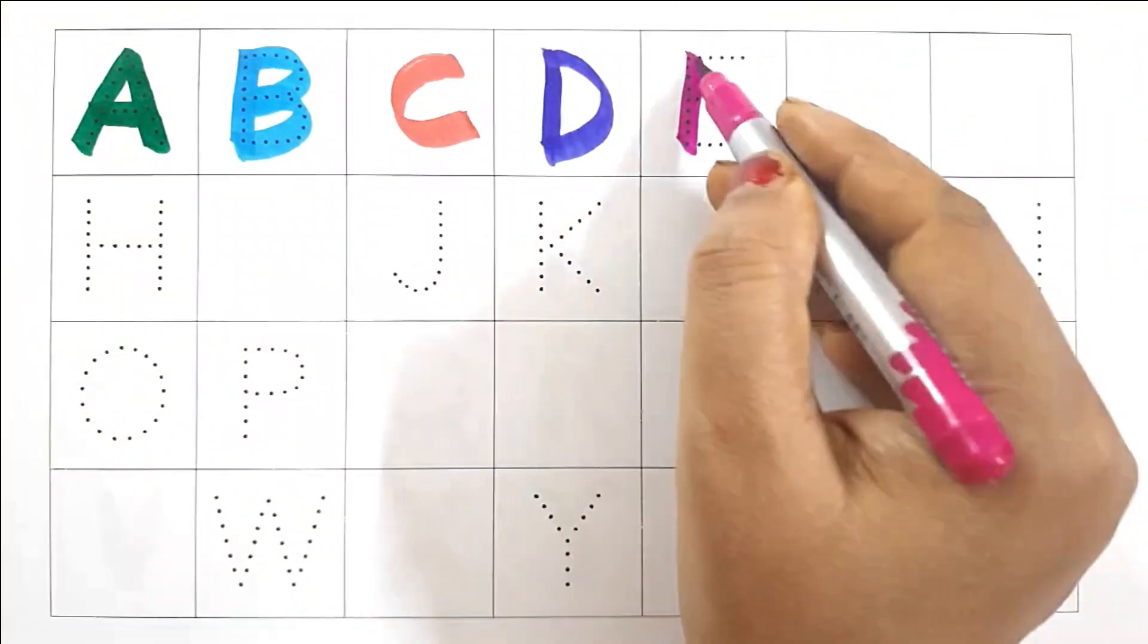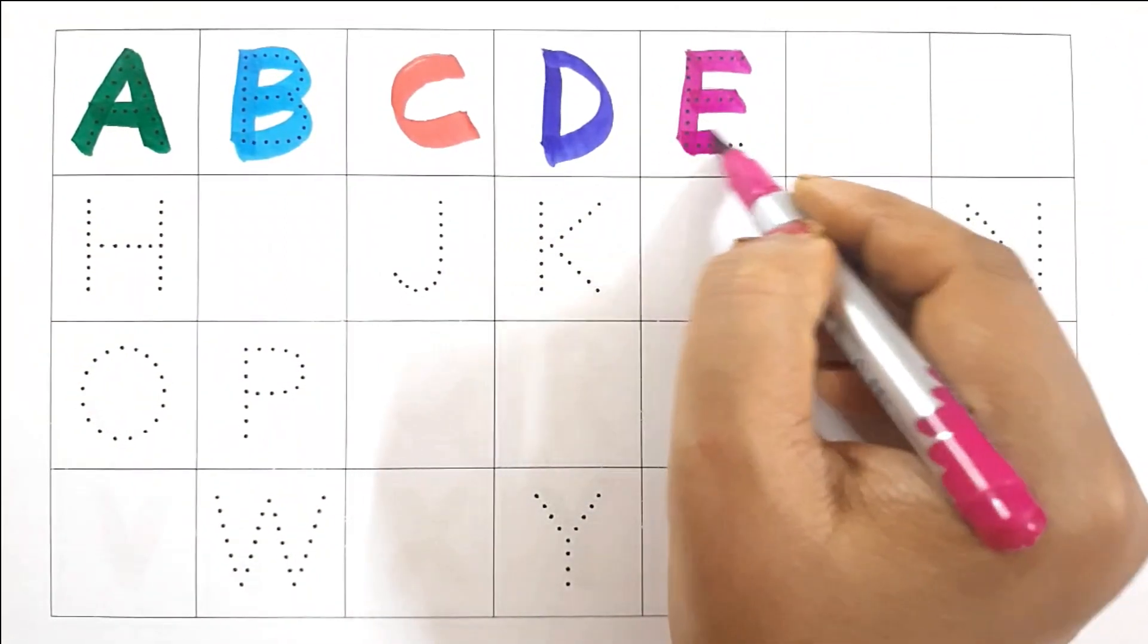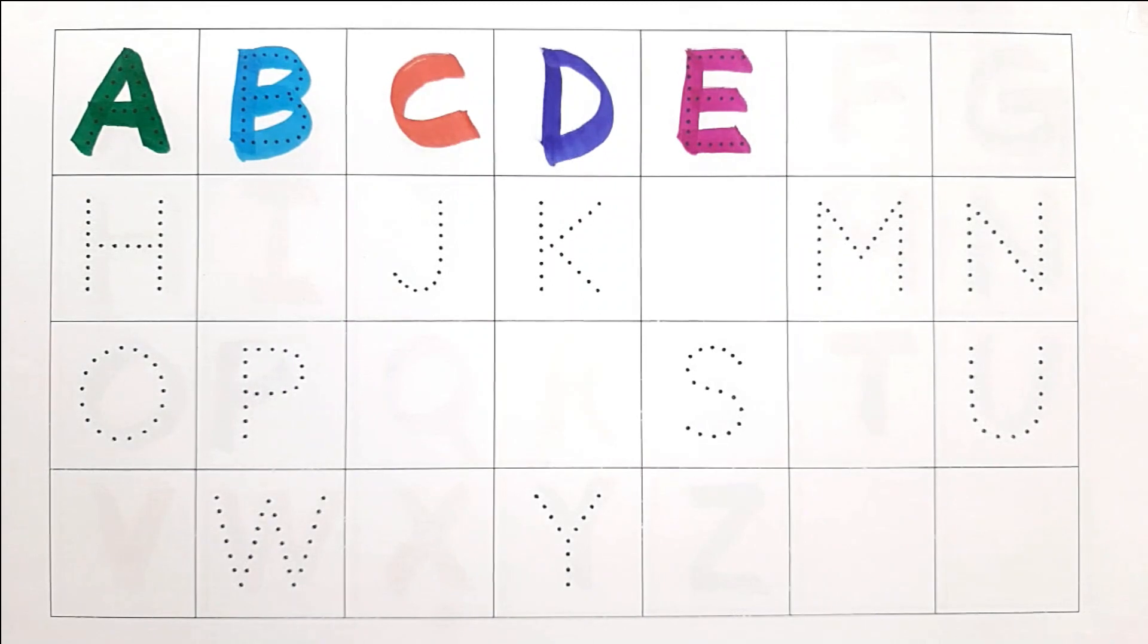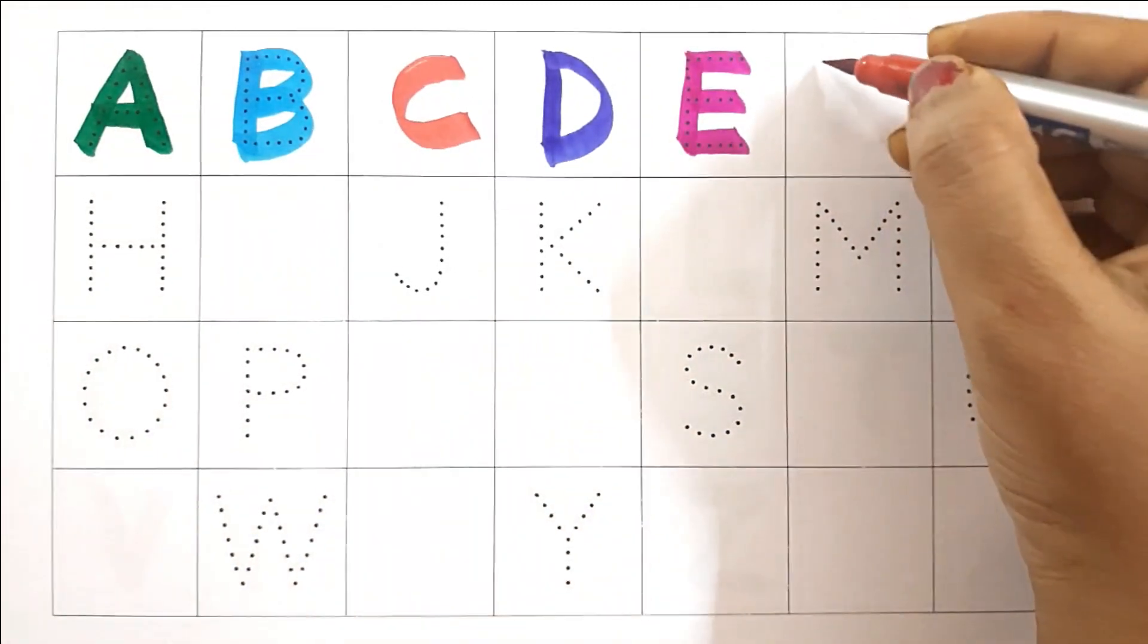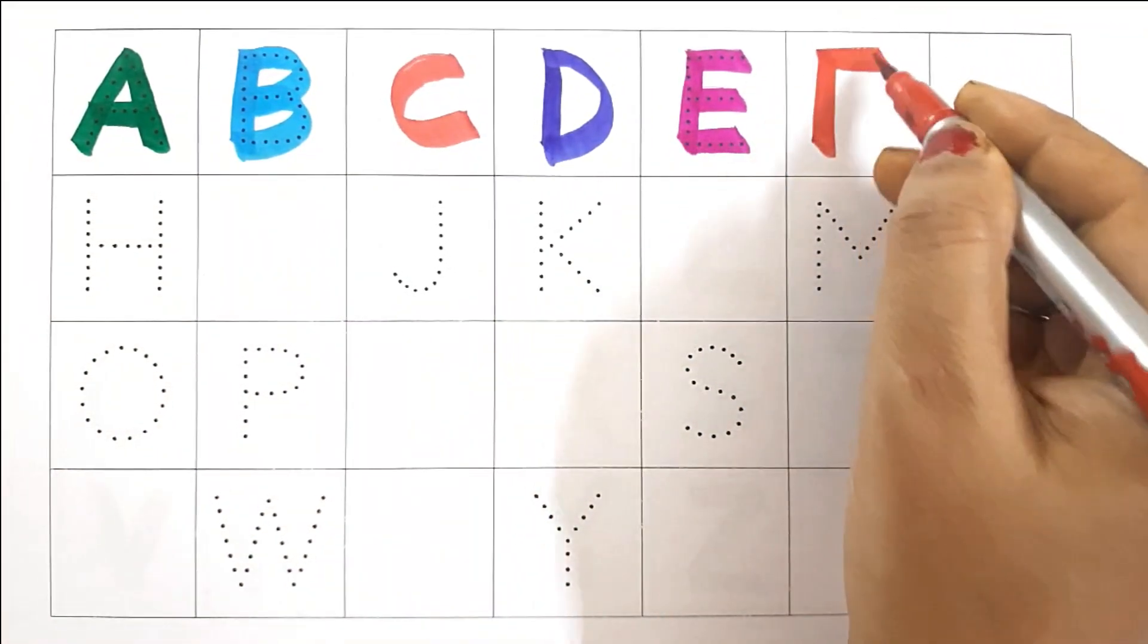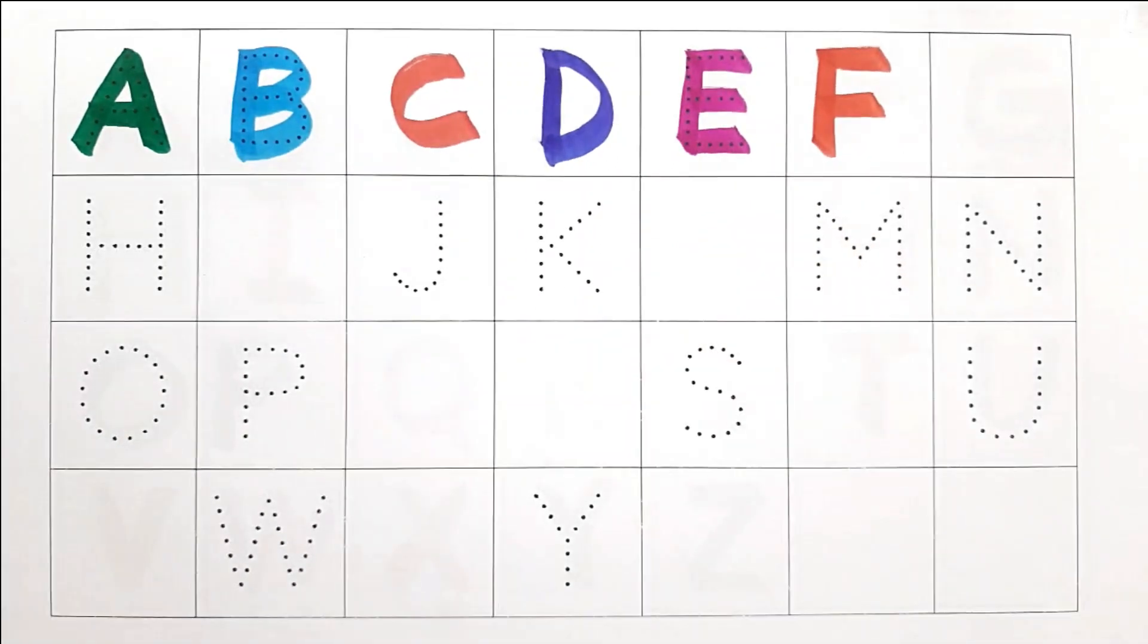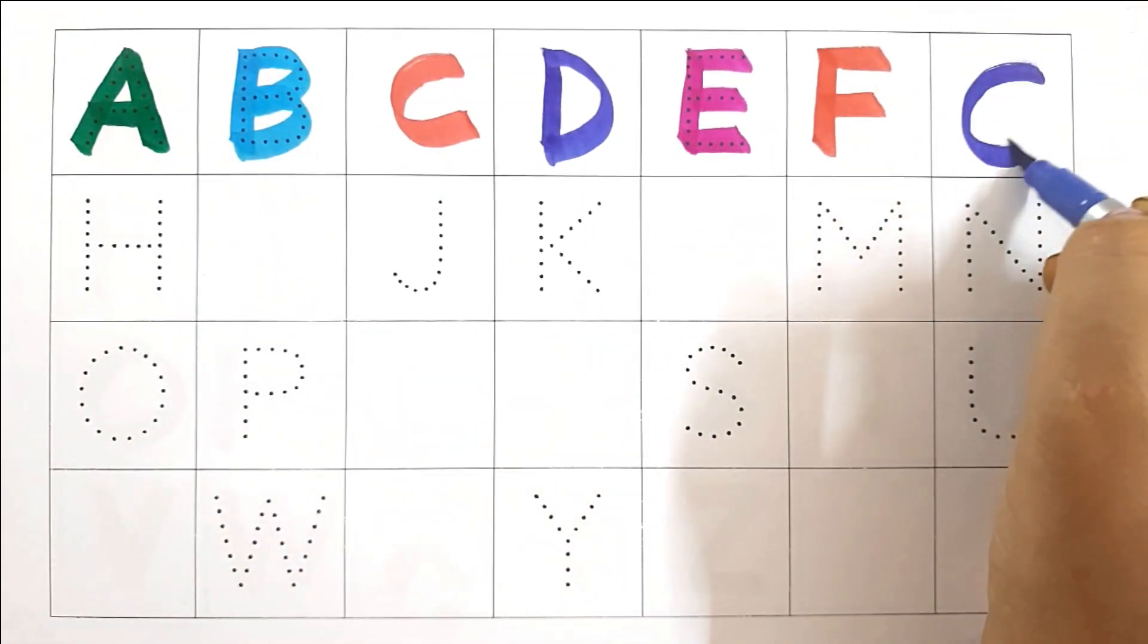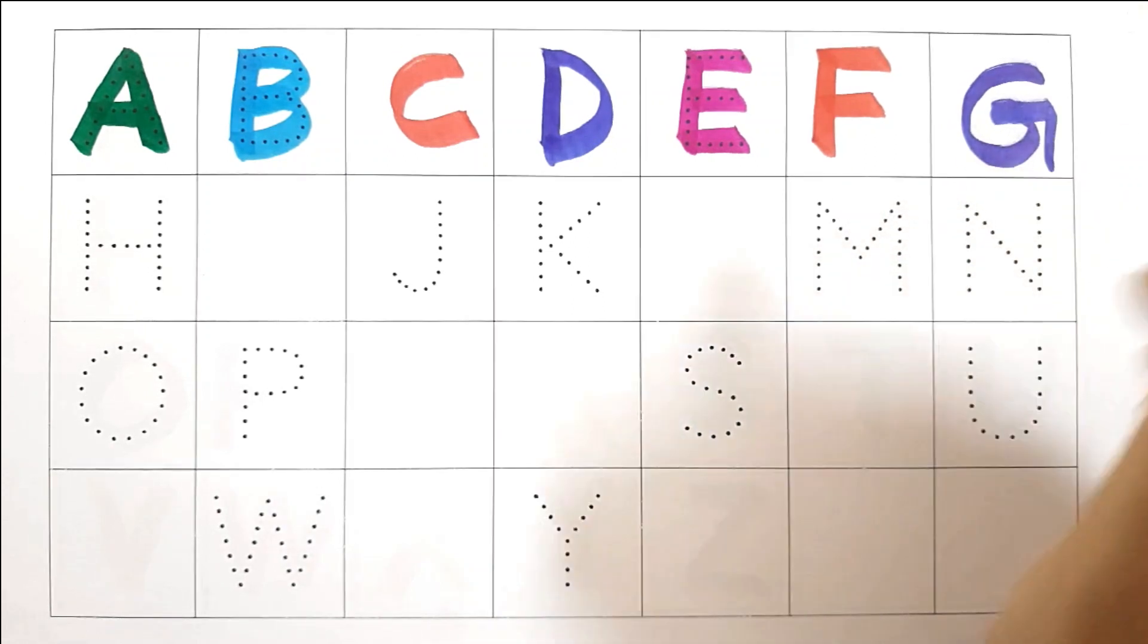E. E for Eye. F. F for Fish. G. G for Goat.